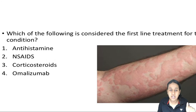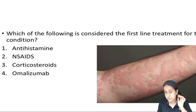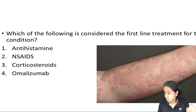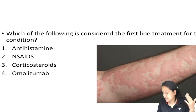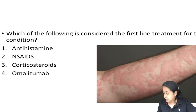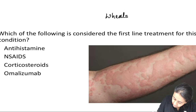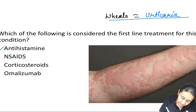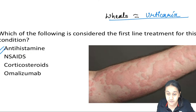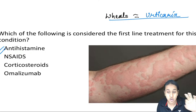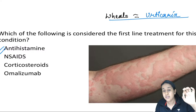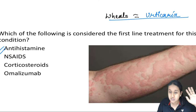In which of the following is considered to be the first line treatment for this particular condition? This is an image of a patient with wheals, and wheals are a feature of urticaria. The treatment of choice in patients of urticaria is antihistaminics. Whether you have mild or severe urticaria, as long as the respiratory system is not affected, the treatment remains antihistaminics.